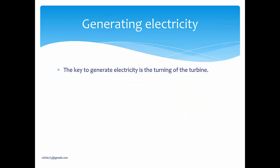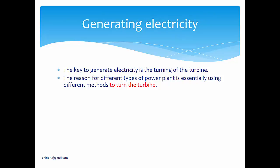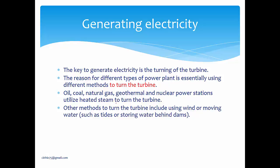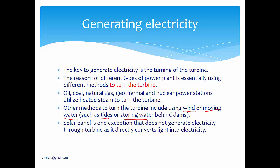The key to generating electricity is the turning of the turbine. Different types of power plants — using oil, coal, natural gas, geothermal, or nuclear power — all use heated steam to turn the turbine; they differ only in their fuel source. Other methods use wind or moving water to turn the turbine, generally known as clean energy. Solar panels are the only exception, directly converting light energy into electricity without a turbine.